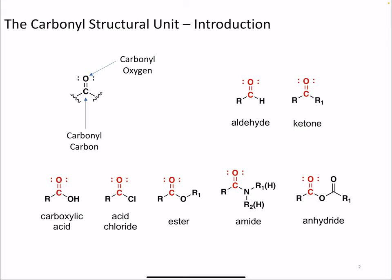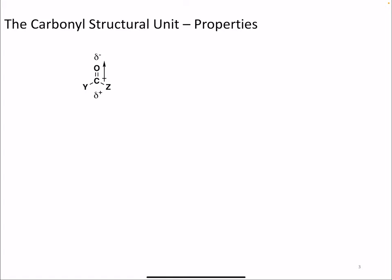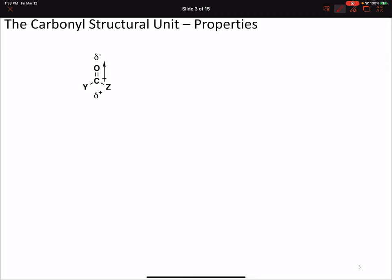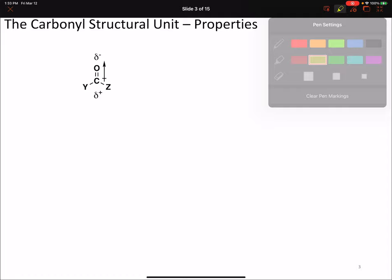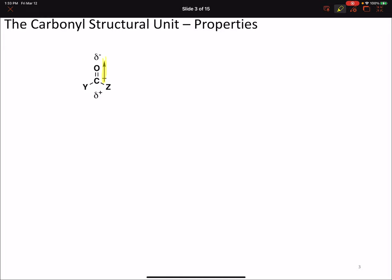We want to focus our attention on aldehydes and ketones and understand what governs their reactivity. One of the things we can see right away is that the carbonyl is a polarized bond, polarized from the carbon to the oxygen, which means the carbon has a partial positive charge and the oxygen has a partial negative charge. That carbon-oxygen pi bond also allows us to draw a charge-separated resonance form where the carbonyl carbon takes a formal positive charge and the carbonyl oxygen takes a formal negative charge.